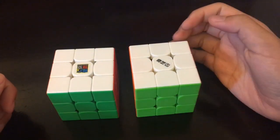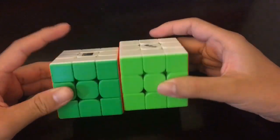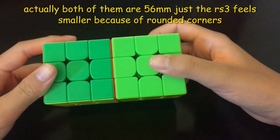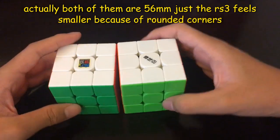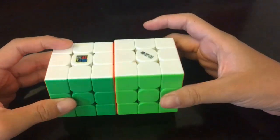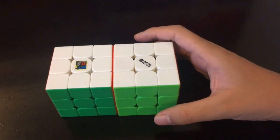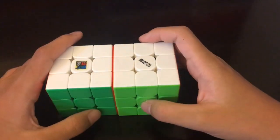For size, the R3M2020 is a bit smaller at 55mm and the HEMS is 56mm, so you'll notice a bit of a size difference right here. Now let's talk about the general turning feel and the corner cutting ability of the cubes.